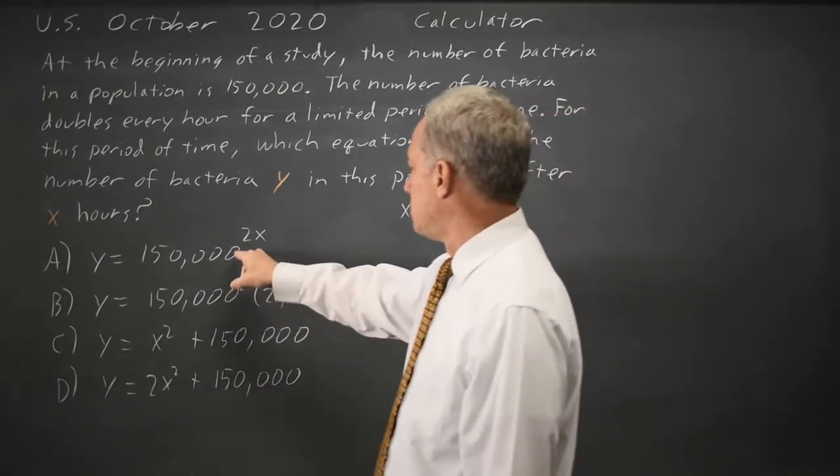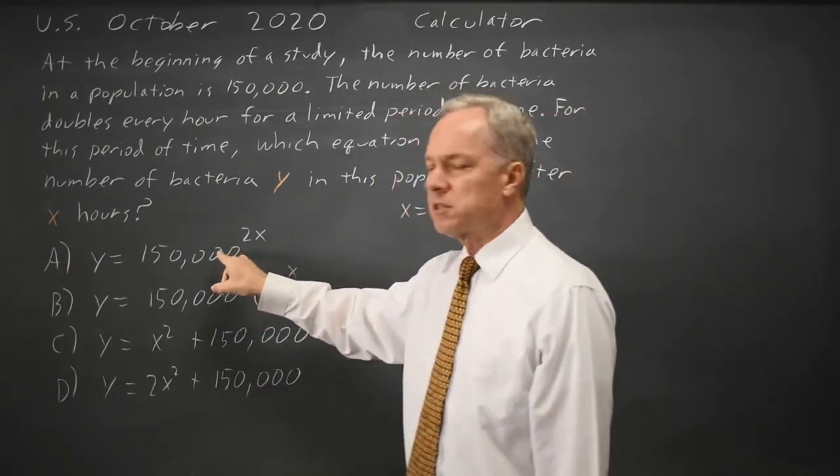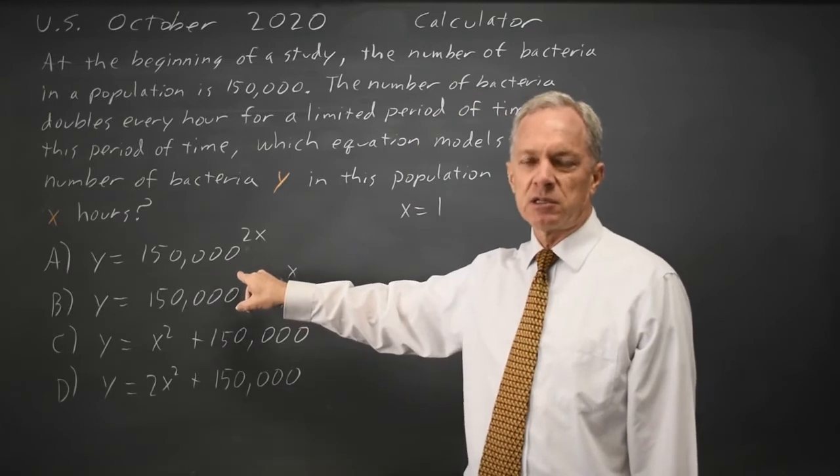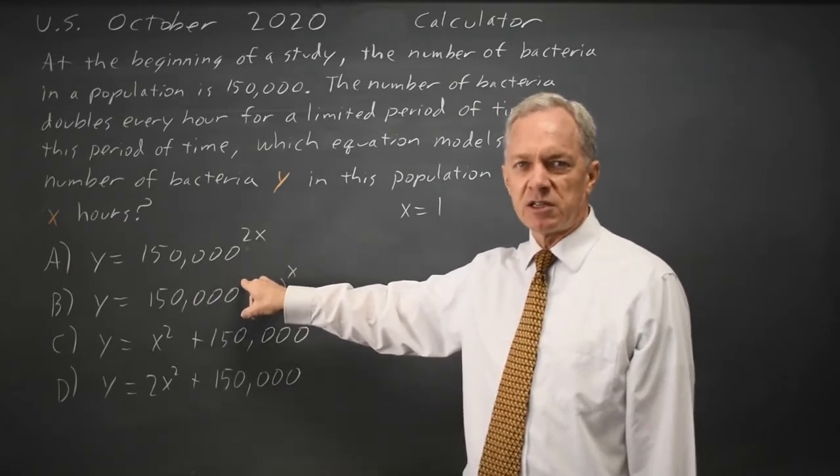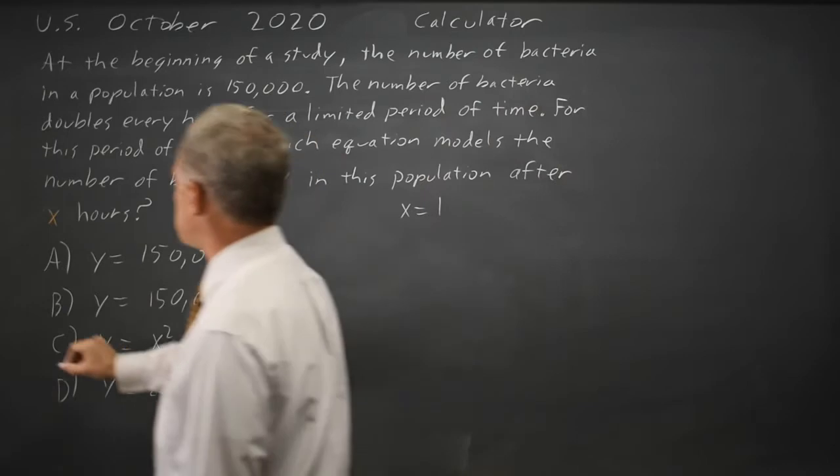If I put 1 in here I get 150,000 squared. I'm multiplying the number by 150,000 not by 2, so that is not correct.